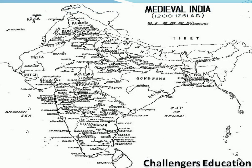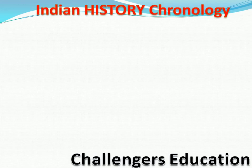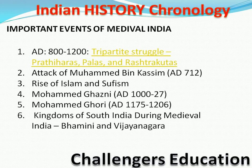Agar hum is map mein dekhein to Odisha — jo ki pehle Kalinga tha — aur upar Bihar ban jayega jab tak hum aage aayenge. Yeh jo image hai, that is of around 1700 AD, matlab last medieval period ka. Ab next one mein important events hue the — AD 800 se lekar 1280 ke beech mein — Tripartite Struggle tha jo Pal aur Rashtrakuta ke beech mein tha, teen raja the.